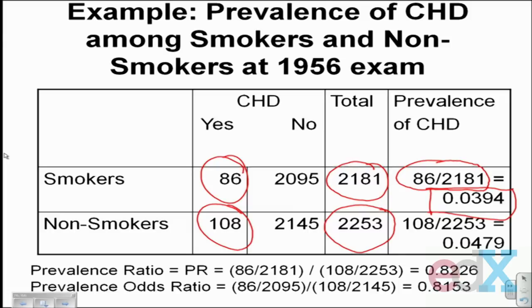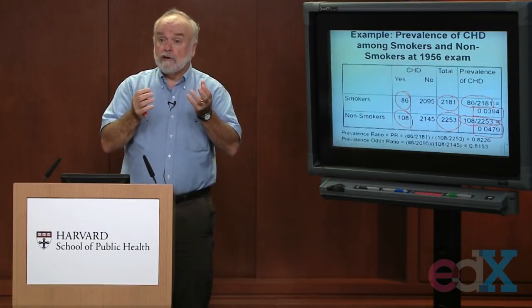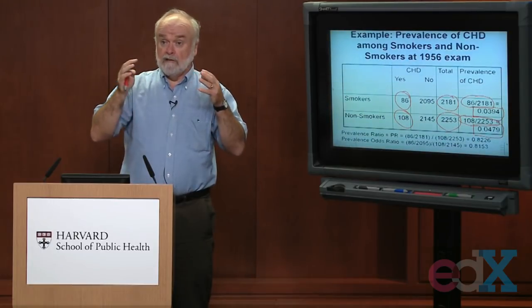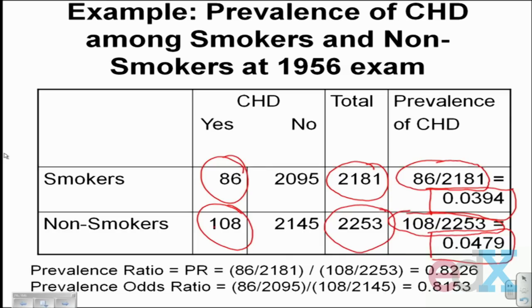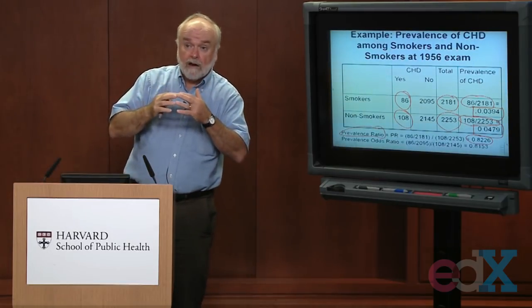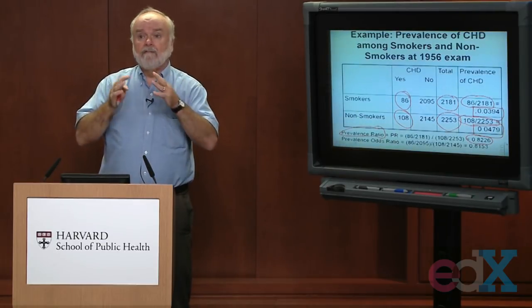That gives a prevalence of 0.0394 — about 4% of the smokers had coronary heart disease at their 1956 exam. Among the 2,253 non-smokers, 108 of them had coronary heart disease, giving a prevalence of 108 divided by 2,253, which is 0.0479, about 5%. The prevalence of coronary heart disease is lower among smokers than non-smokers. From these two prevalence measures, we can calculate a prevalence ratio by dividing 4% by 5%, giving a prevalence ratio of 0.8226.